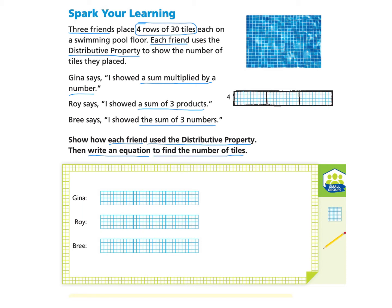Next to our problem we have a visual showing the 4 rows and the 30 tiles. Our job is to find out how each friend — Gina, Roy, and Brie — each used the distributive property to find the number of tiles used. So let's take a look at each friend.